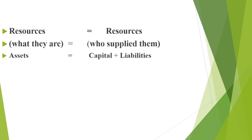The resources on the left side are equal to who supplied them on the right side. Assets are resources. Assets are equal to who supplied them: Capital is what the owner supplies, plus Liabilities are what outsiders supply. Some outsiders supply and some owners supply — together they make the total assets.